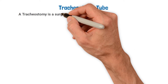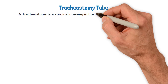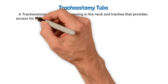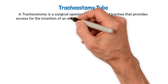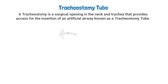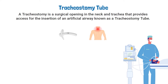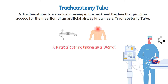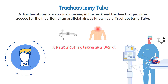A tracheostomy is a surgical opening in the neck and trachea that provides access for the insertion of an artificial airway known as a tracheostomy tube. It's typically indicated when a patient has a condition that will require long-term mechanical ventilatory support. A surgical opening known as a stoma is made in the anterior part of the throat.